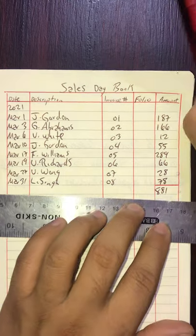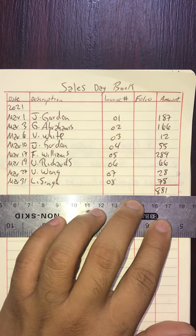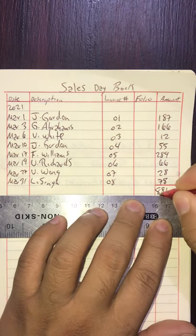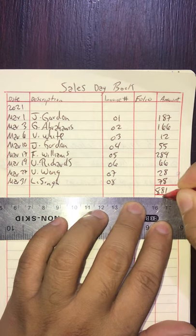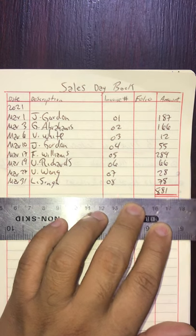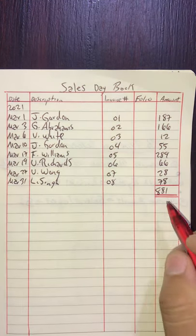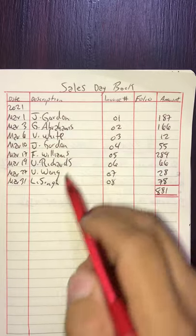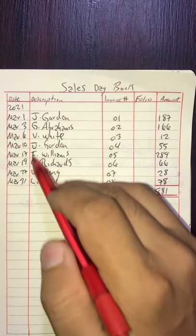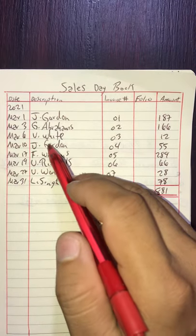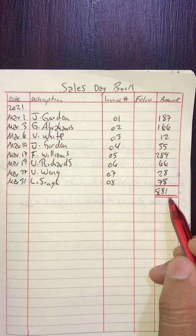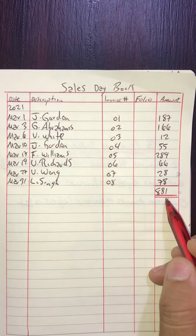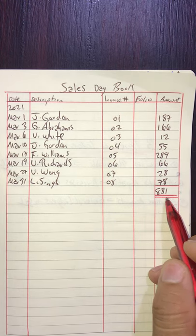This amount of $881 represents the total sales on credit for the month of March. I will double underline it — this is the amount that these people, who are accounts receivable, owe me and need to pay at some point in the near future.